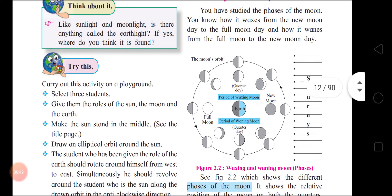First of all, the moon gets illuminated. What do you mean by illuminated? It gets light — the moon gets light by the sunlight. The illuminated part of the moon seen from the Earth appears greater or smaller day by day due to the moon's revolution around the Earth.